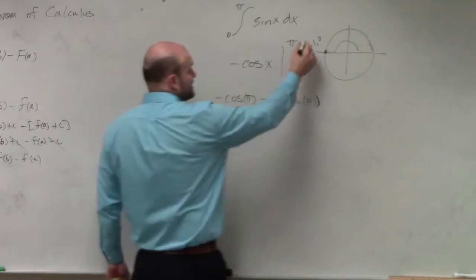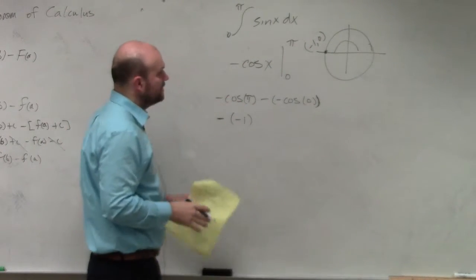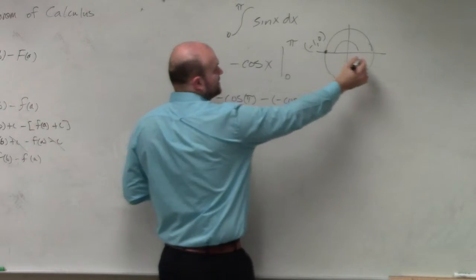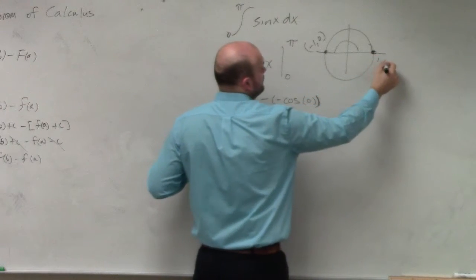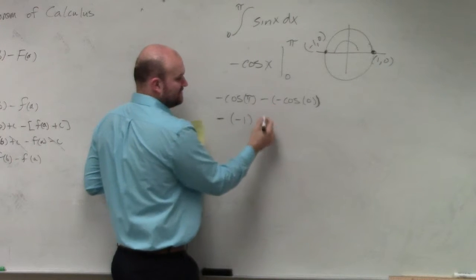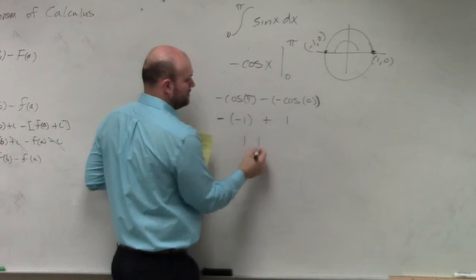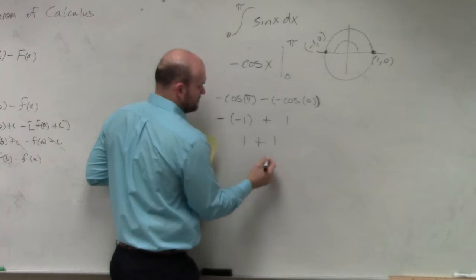Because cosine of pi, the x-coordinate there, is negative 1. And then at cosine of 0, the point is 1, 0. But it's minus a negative, so that's plus 1. So you have 1 plus 1 equals 2.